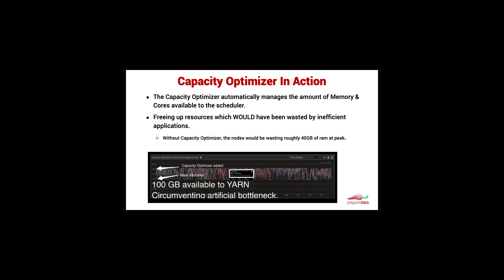With this automatic tuning, what we're doing is managing the number of cores and the amount of memory available to the scheduler in real time. We're doing this so that we can free up resources that would be wasted by inefficient applications. If, for example, an application asks for 100 cores but only uses 20 cores, the scheduler can't leverage those 80 cores without some sort of intervention.